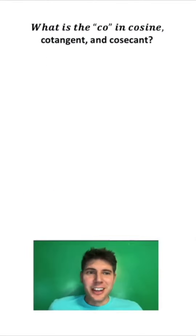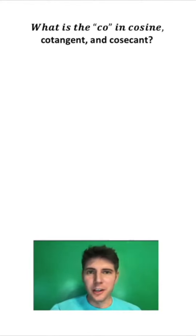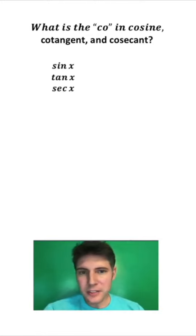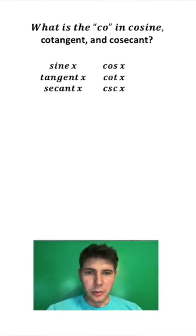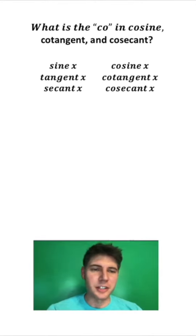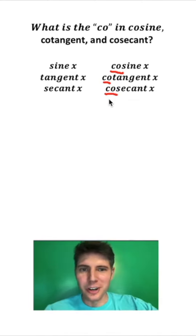I've gotten this question several times: what is the 'co' in cosine, cotangent, and cosecant? When we're doing trigonometry, we have sine, tangent, and secant, and then we also have cosine, cotangent, and cosecant. If we write out the words, we can see that each of these is the exact same word but with a 'co' thrown in front. So what does the 'co' mean? The 'co' is short for complement — complementary angles are any two angles that sum to 90 degrees.